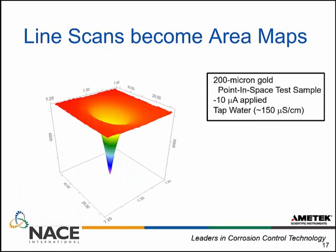To make more interesting area maps, we repeat the same experiment but instead of just scanning in X, we go across X, then increment Y and scan across again — like a typewriter — building up an X-Y plane that gives a measurement parameter. This is the same data from the last slide, just at different Y positions, now represented as a three-dimensional data map.